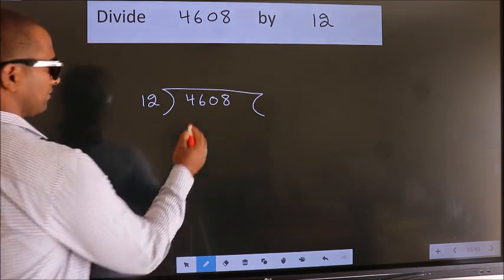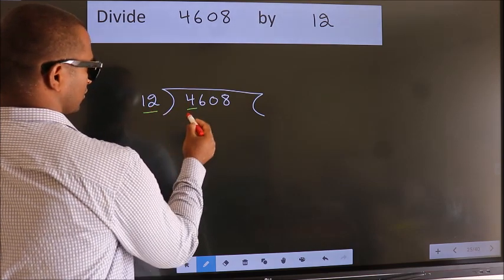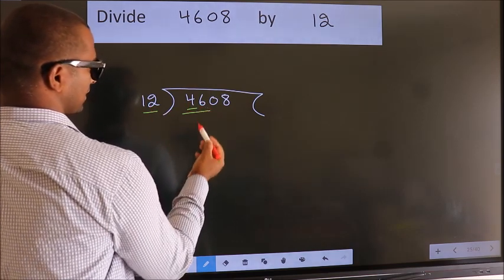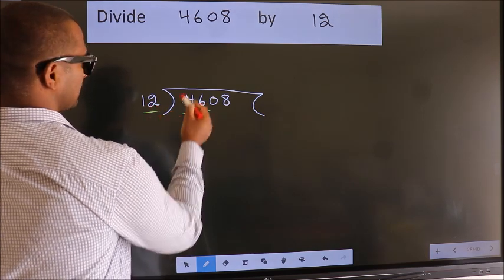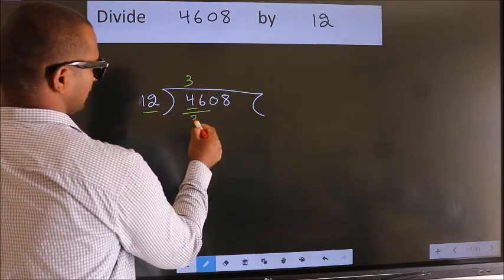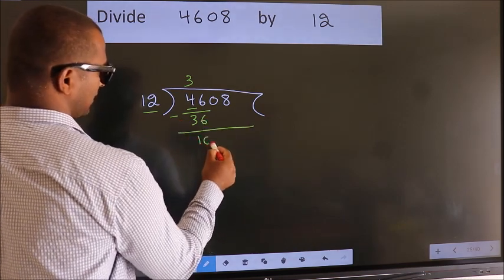Next, here we have 4, here 12. 4 is smaller than 12, so we should take two numbers, 46. A number close to 46 in the 12 table is 12 threes, 36. Now we should subtract. We get 10.